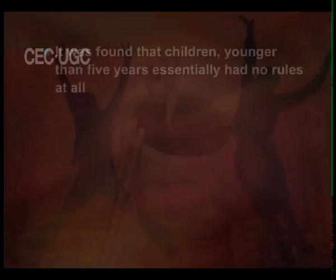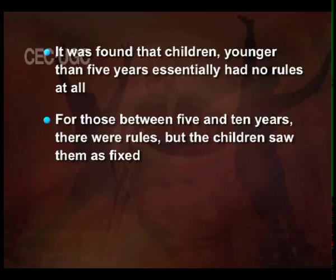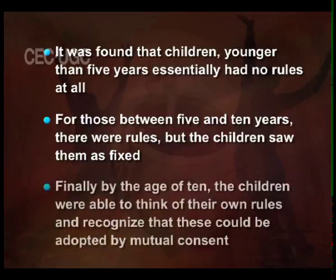The basis of this moral theory came from two lines of research. The first was to observe children of different ages while they were playing marbles and then ask them questions about the rules of the game. It was found that children younger than five years essentially had no rules at all. For those between five and ten years, there were rules but the children saw them as fixed. By the age of ten, children were able to think of their own rules and recognise that these could be adopted by mutual consent.